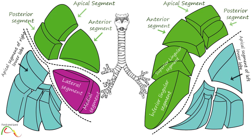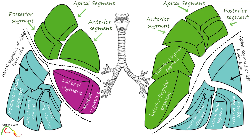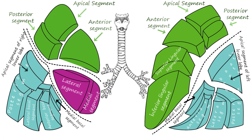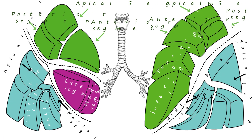Lower lobes in both lungs have five segments each: the apical or superior segment, posterior basal segment, lateral basal segment, anterior basal segment, and medial basal segment, which is also known as the cardiac segment. On the left side, the anterior medial basal segment is formed by the merger of the anterior basal and medial basal segments.